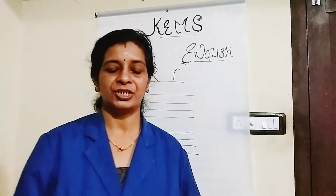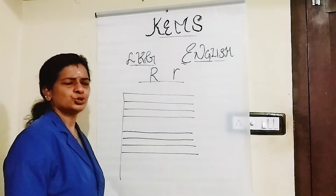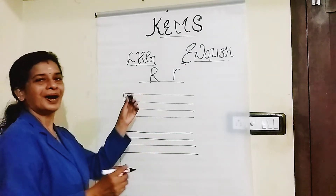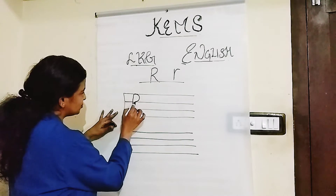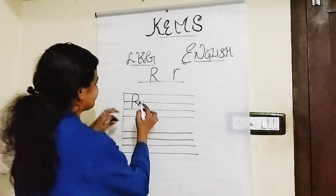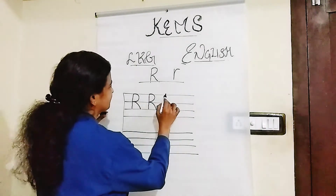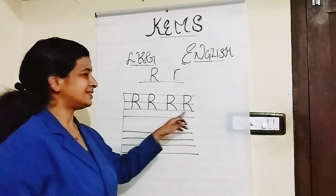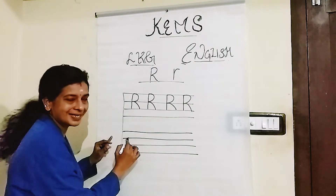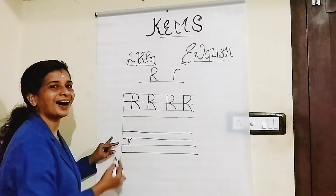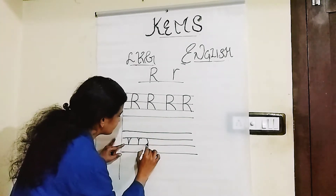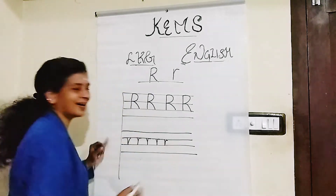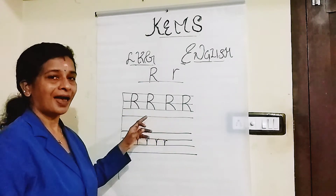My dear children, let's learn how to write letter R — Mama R and Baby R. First, Mama R: a standing line, and do like this — R. Next, Baby R. Listen: R, R, R, R. Mama R and Baby R.